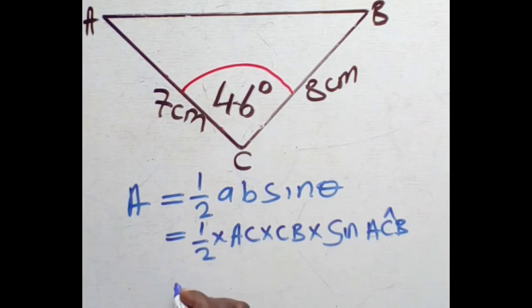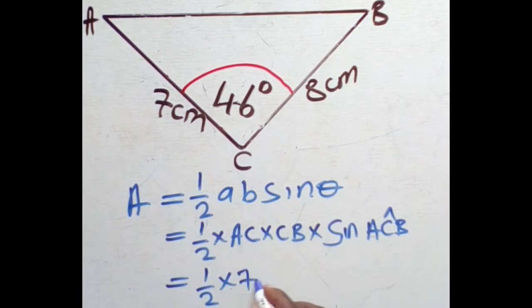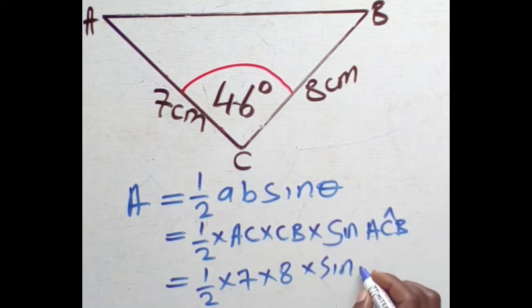Then you substitute further. You are going to have one over two times AC, in this case is that 7, then times CB, in this case is that 8, then times sine angle. So sine ACB is that is 46, 46 degrees.